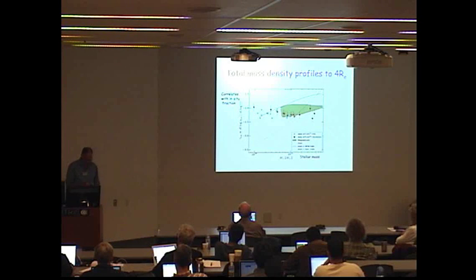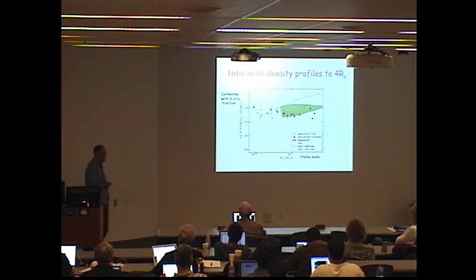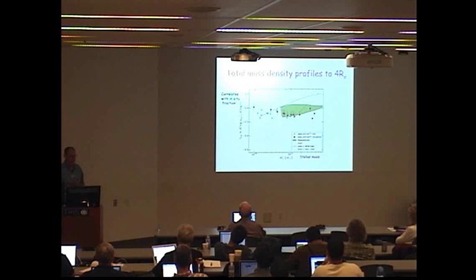Something has come up earlier in this conference too. Rio Remus mentioned this gamma tot parameter, so this is the density, the total mass density of a galaxy, measuring both the dark matter and the stellar component, plotting this as a function of stellar mass. This quantity, gamma tot, correlates quite nicely with the in situ fraction that a galaxy has.